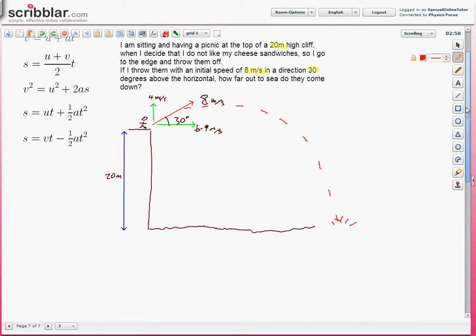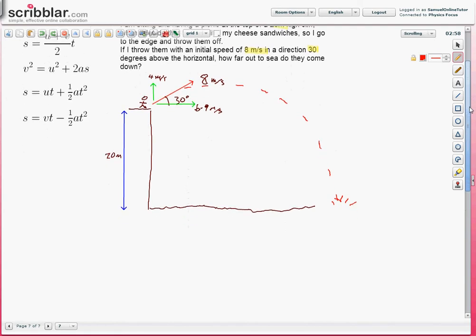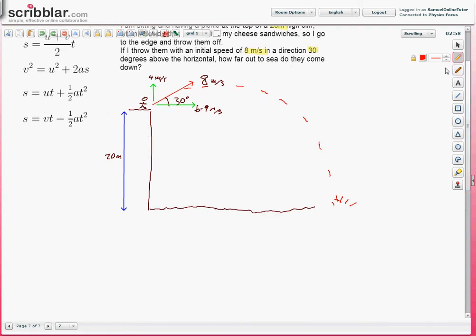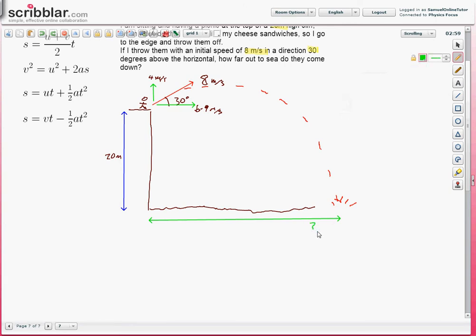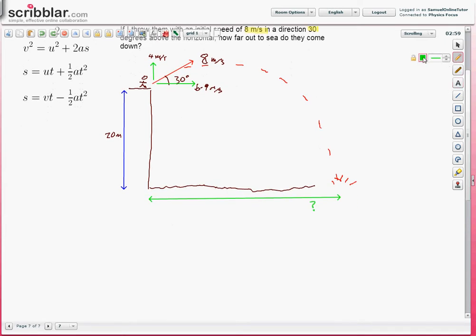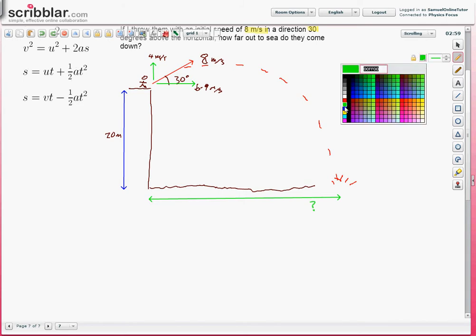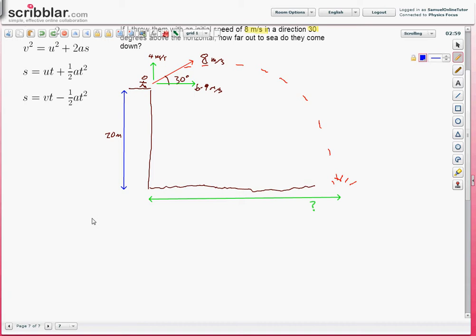So, we've drawn the diagram, put on it all of the information that we've been given. We want to find that distance there. Now, just like with one-dimensional Suvat situations, all we do now is make a list of all of the information that we know. Except that, now that we're dealing with two dimensions, we have to split this into horizontal and vertical.